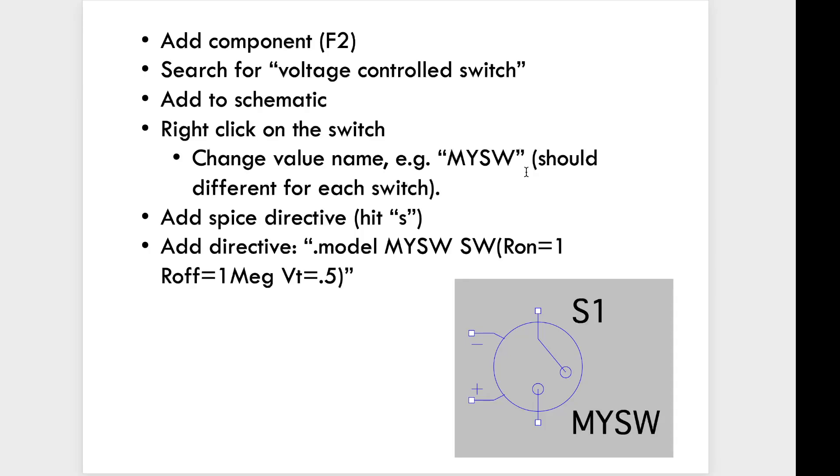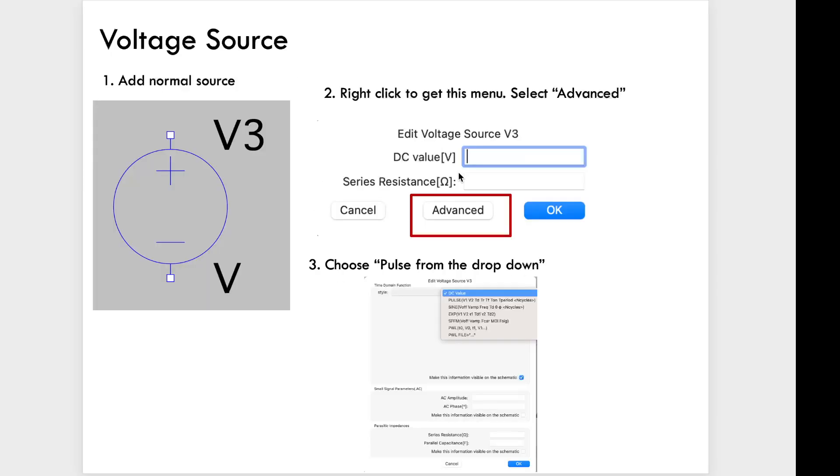The value name should be different for each switch that you have on your schematic. Then hit the SPICE directive by going S and then add a directive that looks something like this. Again, this, my SW, that should match whatever you selected for the value name.